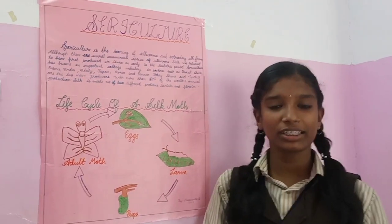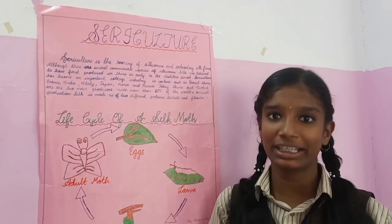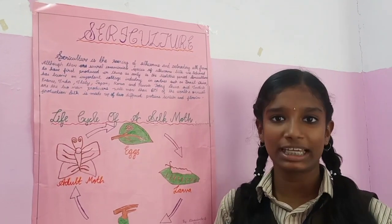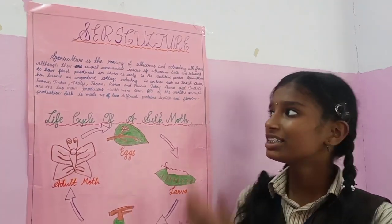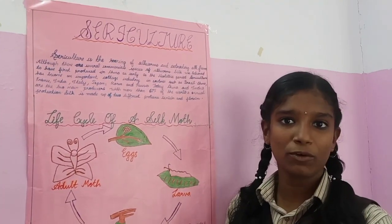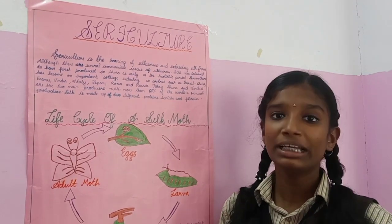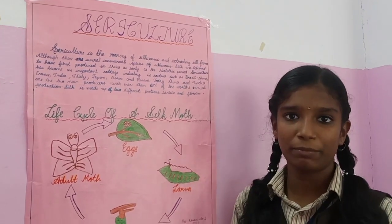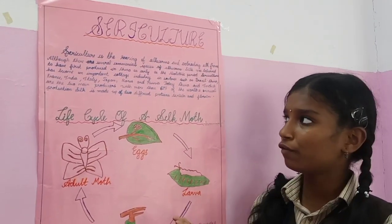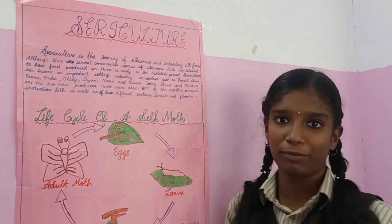Hi, I am Devananda of class 8. I am here to explain about sericulture. Sericulture is the rearing of silkworms and extracting silk from them. Silk is a fiber which is made of two proteins: sericin and fibroin.